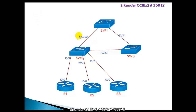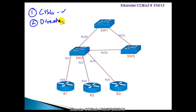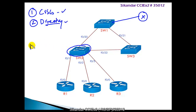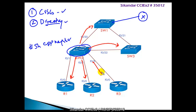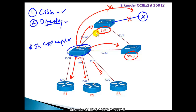A major drawback of CDP is that it only works with Cisco devices. Additionally, it only provides information about directly connected devices. For example, on Switch 2, the 'show CDP neighbor' command will only display directly connected devices - the three routers, Switch 1, and Switch 3 - but not devices that are not directly connected.